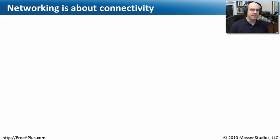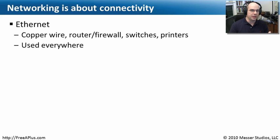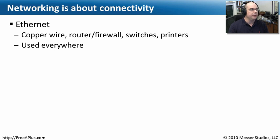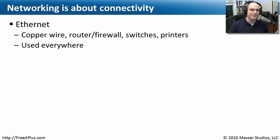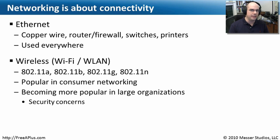Networking is really about connecting devices together, and on our common networks there are a couple of different ways to do this. One of the easiest and most common ways is with Ethernet — you take a wire, you plug it in, it's usually a copper wire. It's what we use in our large infrastructures to connect devices at high speeds, whether it's a router, a firewall, a switch, a printer, a server, or whatever it happens to be. You really find Ethernet networks everywhere; it's hard to find a place that doesn't have one these days.